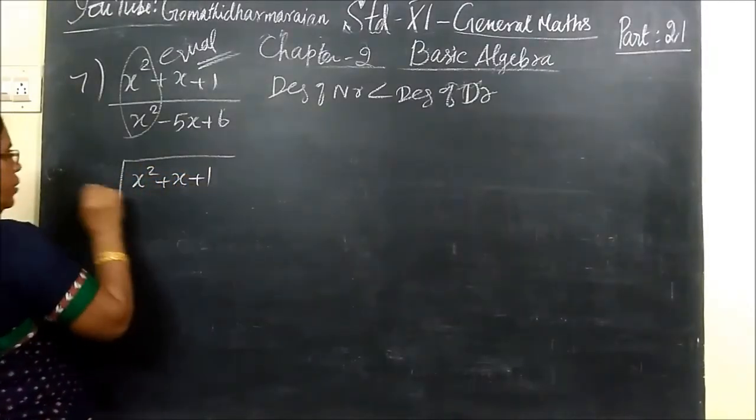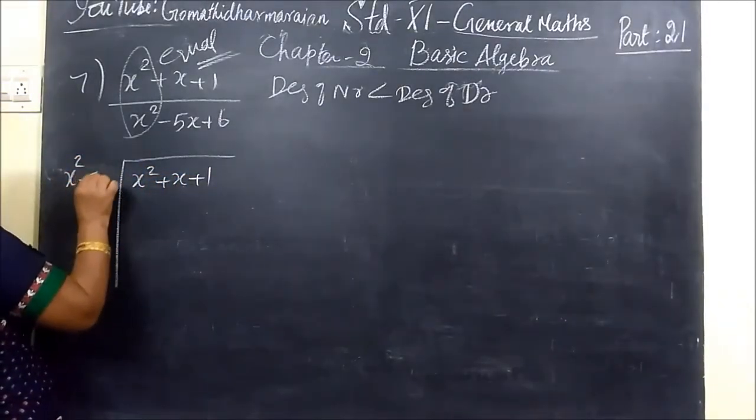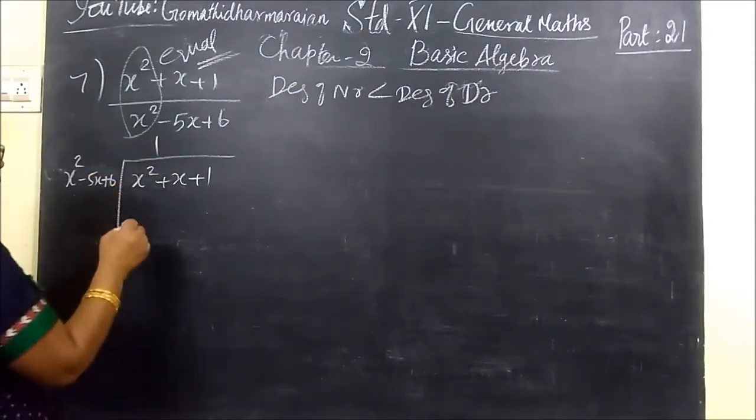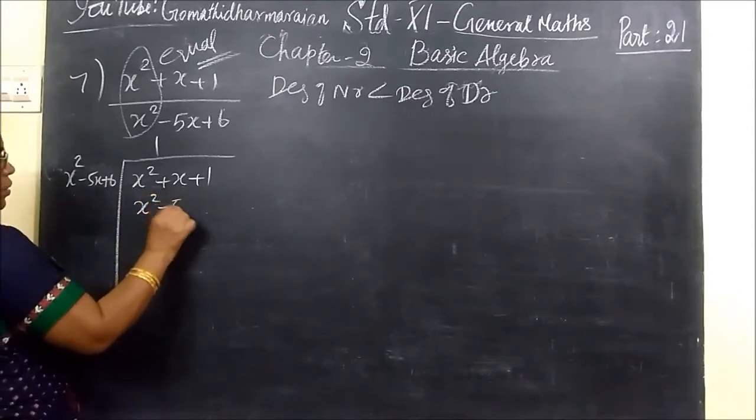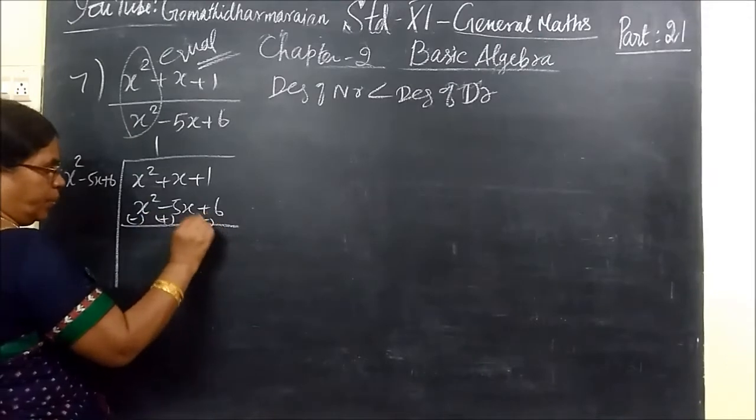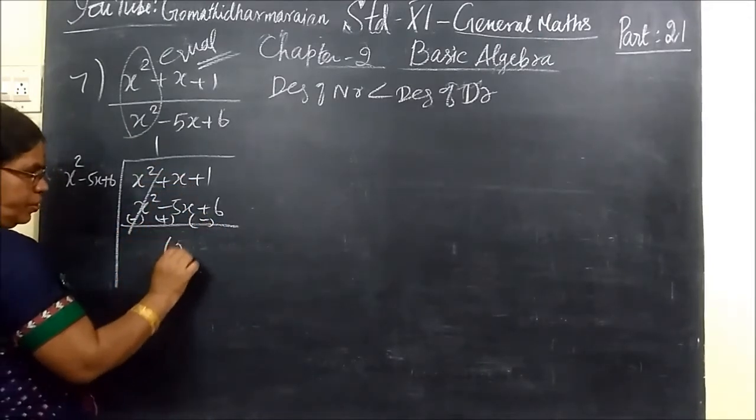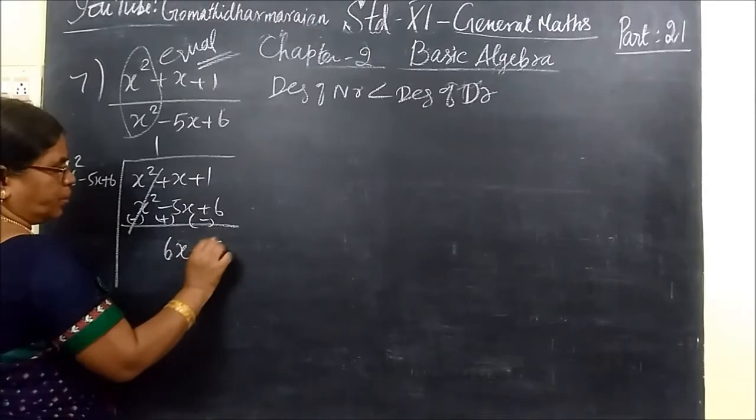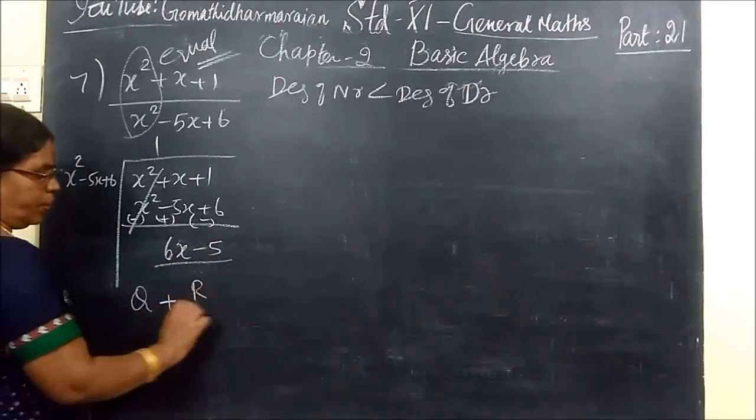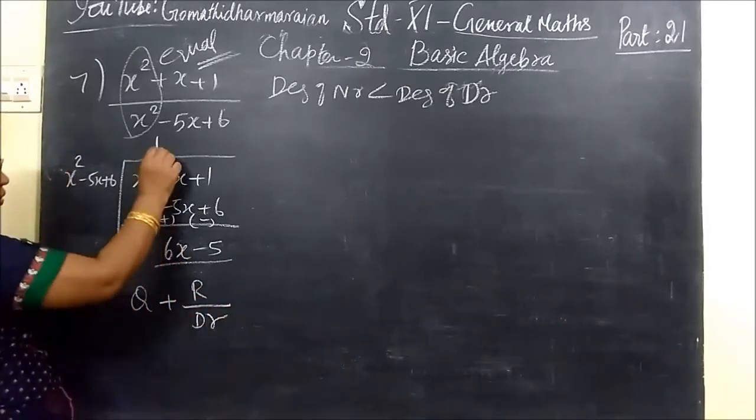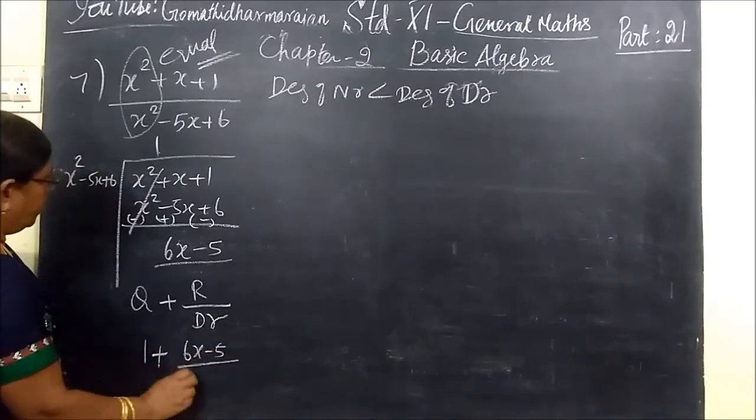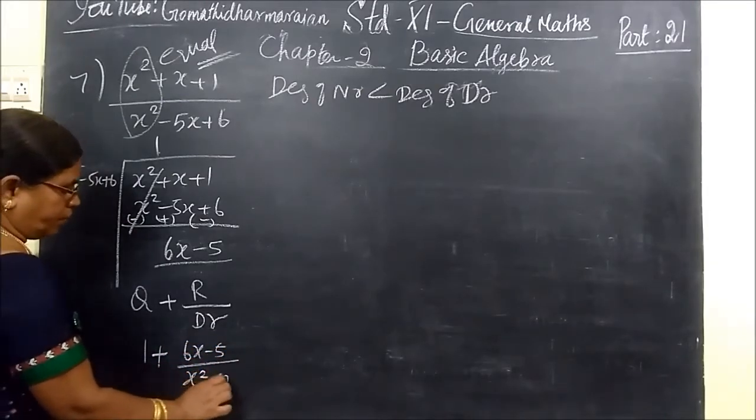Use your division. x squared plus x plus 1 into x squared minus 5x plus 6. So one time, x squared minus 5x plus 6. Now sign change. When you bring down, sign changes. That is what we have to do. 6x then greater number sign minus 5. So how do you write? Quotient plus remainder by divisor. Quotient is 1 plus then 6x minus 5 by x squared minus 5x plus 6.